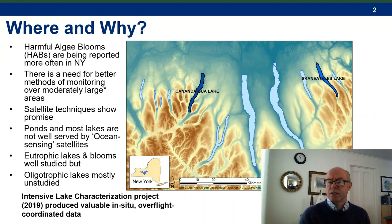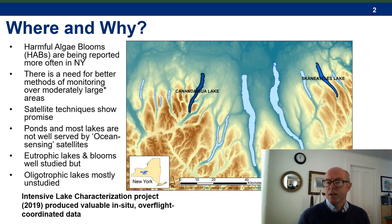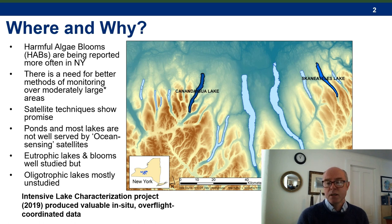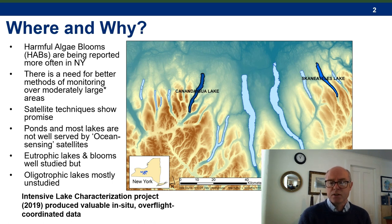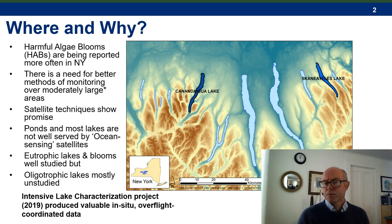Why were we interested in doing this study? Well, harmful algal blooms, or HABs, are being reported more often in New York State, and there's a need for better methods of monitoring HABs over moderately large areas — which I define here as being between 3 acres and 2,000 acres — based on image pixel sizes from ocean sensing satellites. Ponds and most lakes are not well served by ocean sensing satellites, whose pixels are too large to resolve small inland water bodies.